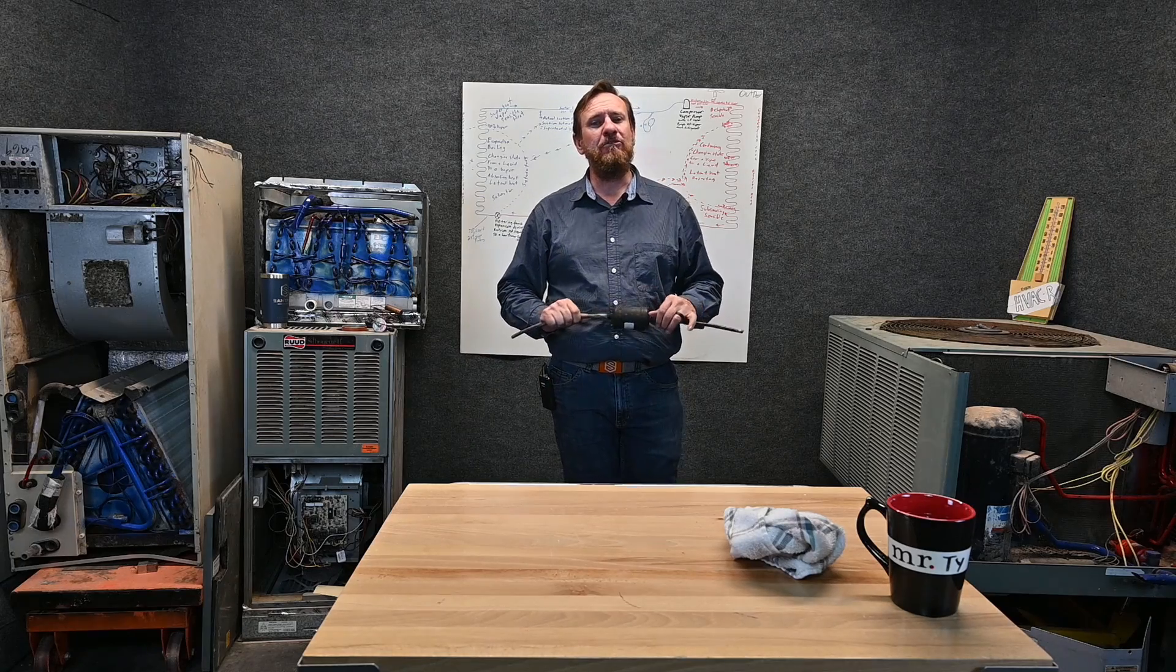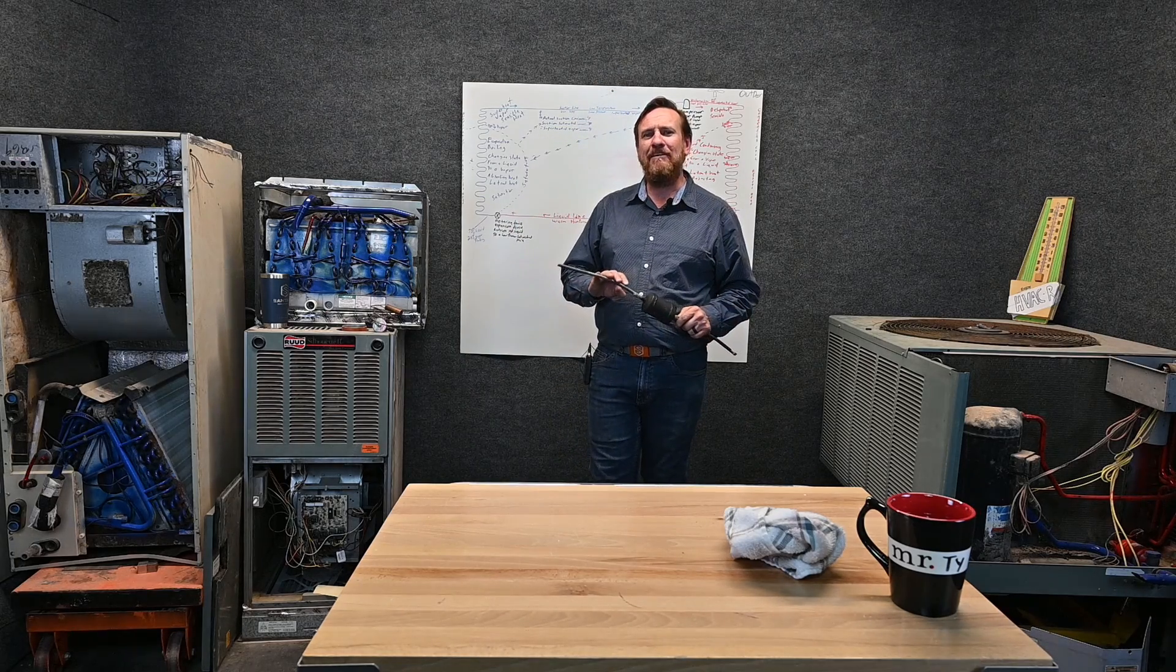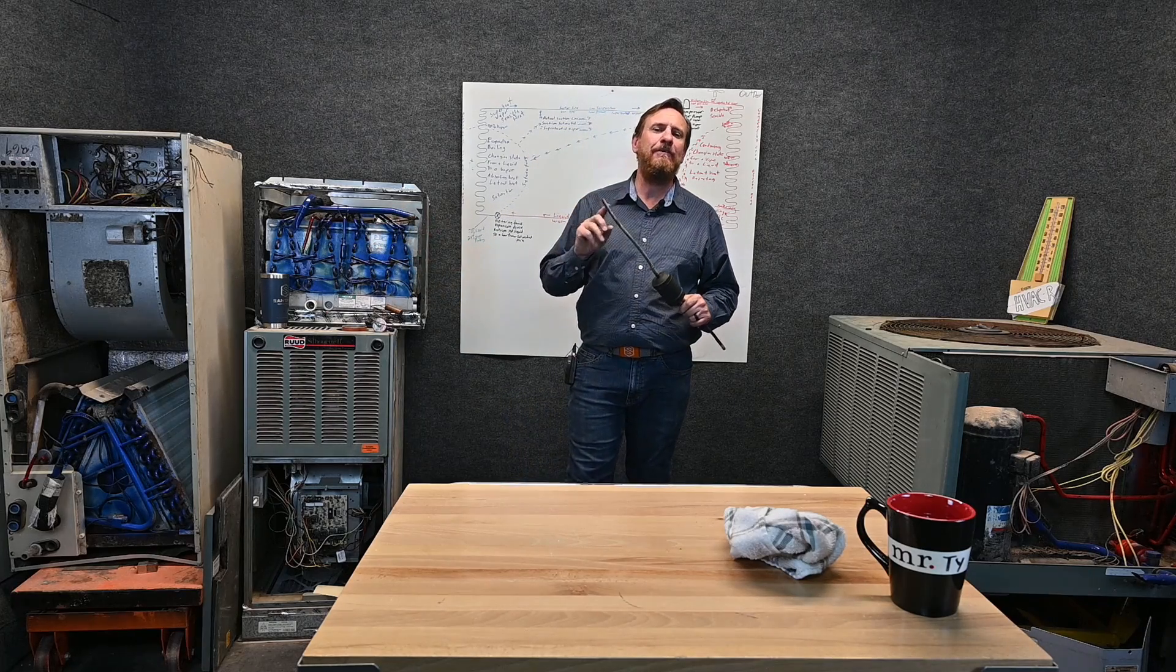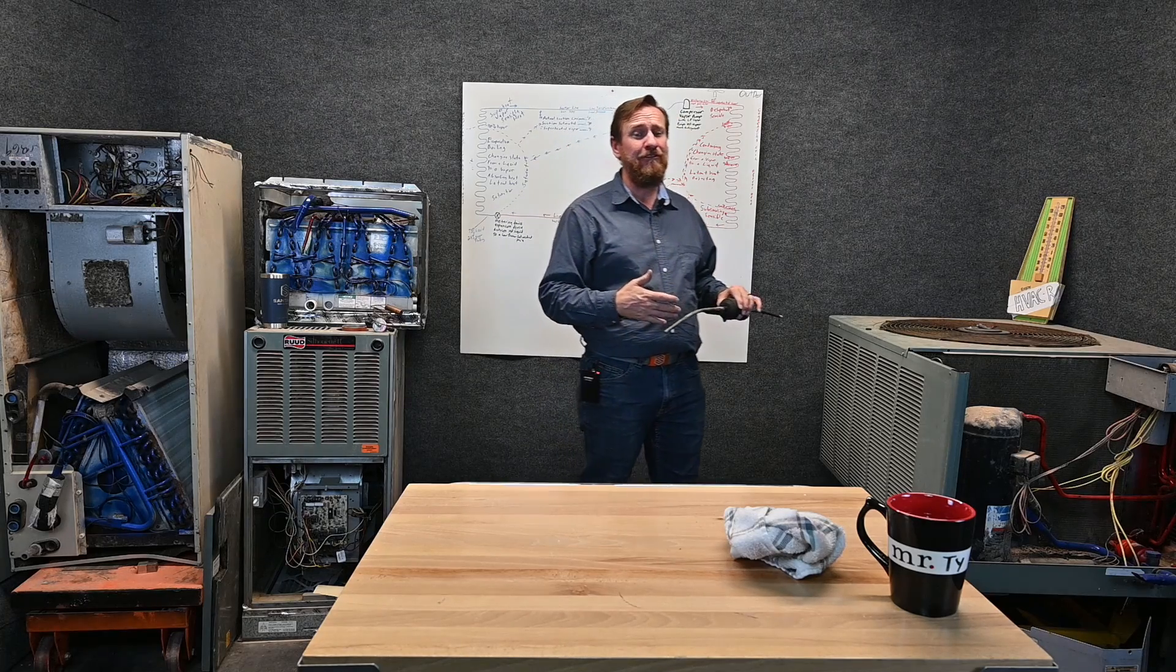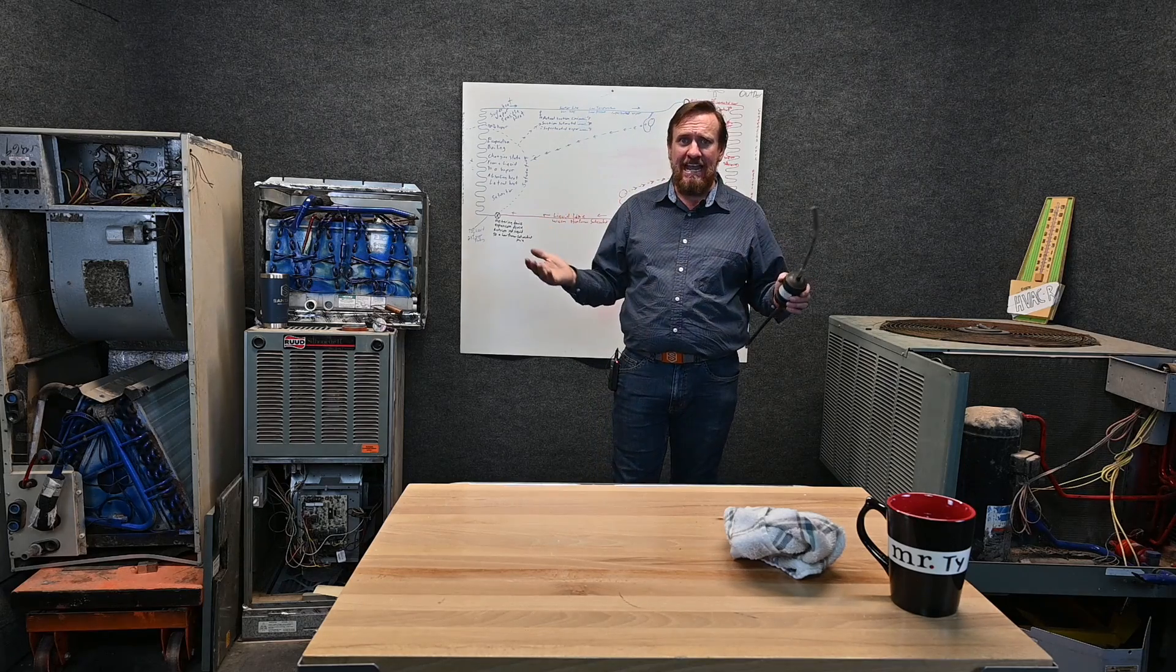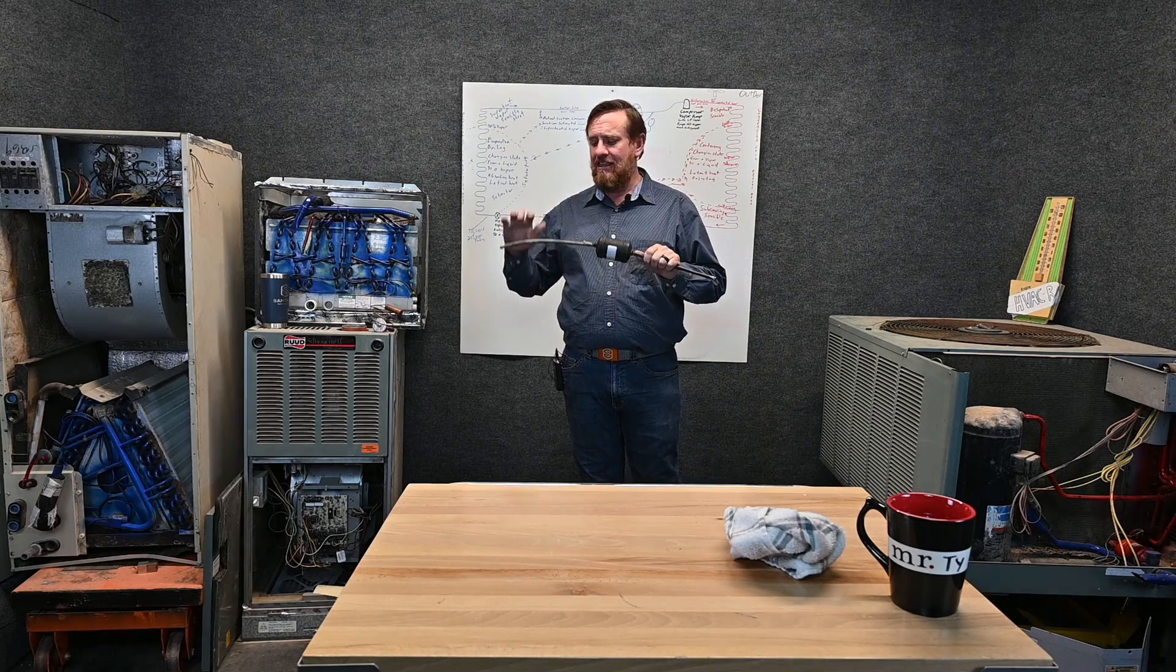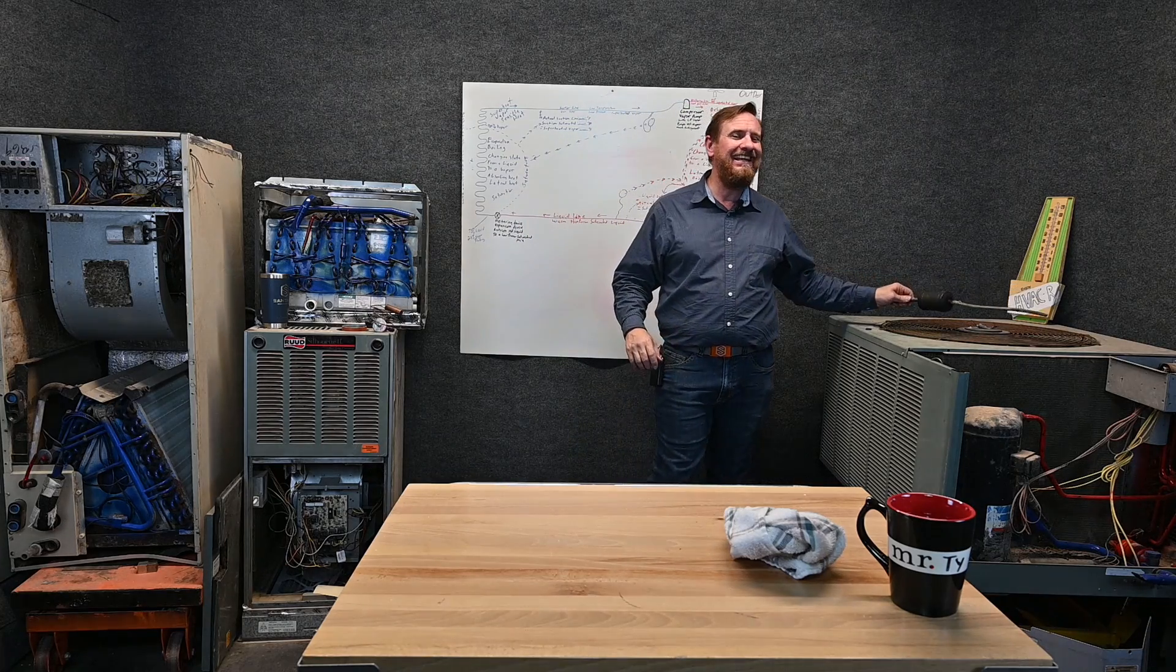On those conditions we want to make sure we insulate this liquid line. Pretty much as a general rule anytime I'm having a liquid line run in the attic I want to make sure it's insulated because I do have the possibility of it losing some of that subcooling. In other words adding sensible heat back to the refrigerant. Subcooling we want to remove sensible heat below saturation. If I put sensible heat back into it such as an attic or some commercial and industrial application we have a lot of heat then you could definitely lose your subcooling.